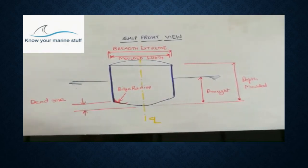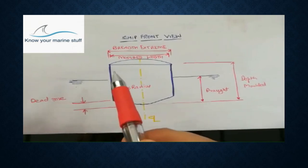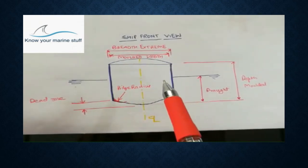Now the other is breadth molded. It is the maximum breadth or beam of the ship measured inside the inner shell stakes of plating and usually occurs on amidship. There is a plate thickness, and inside this thickness, the breadth is known as molded breadth.